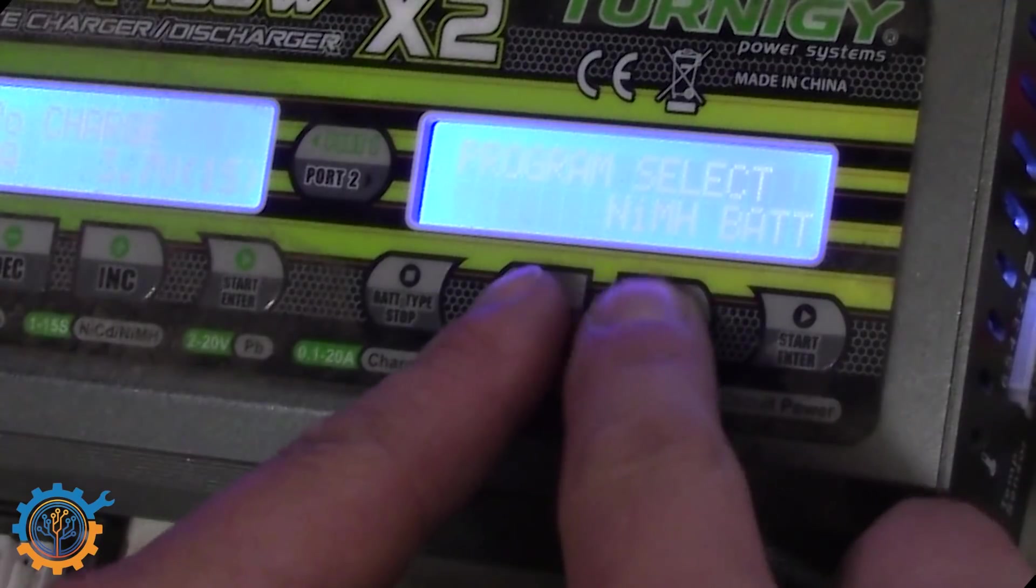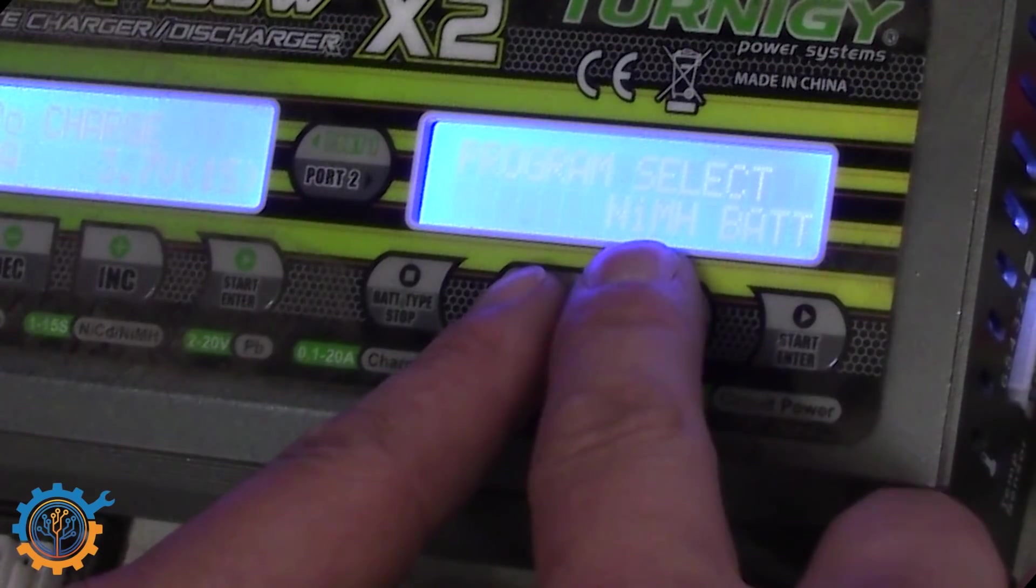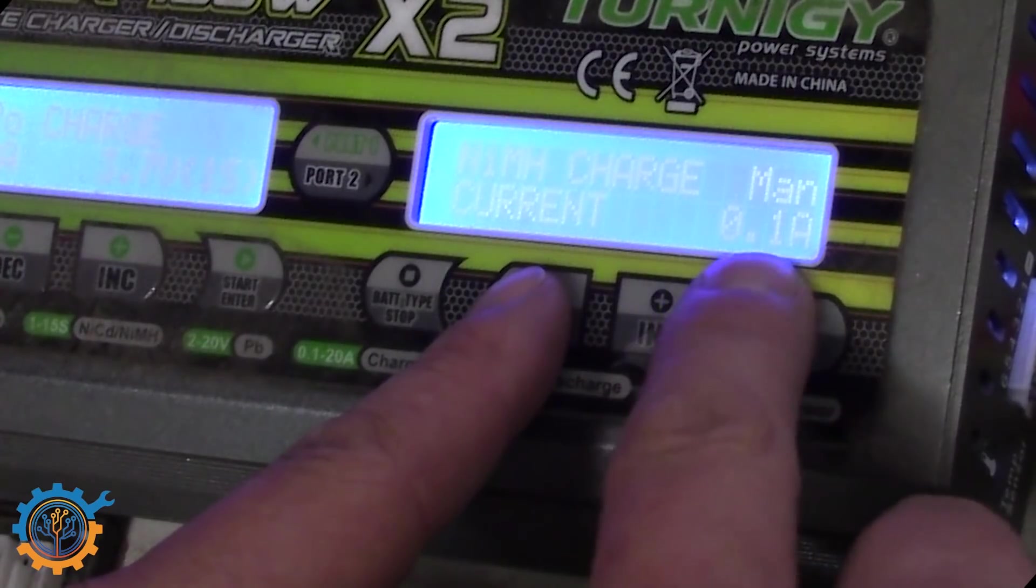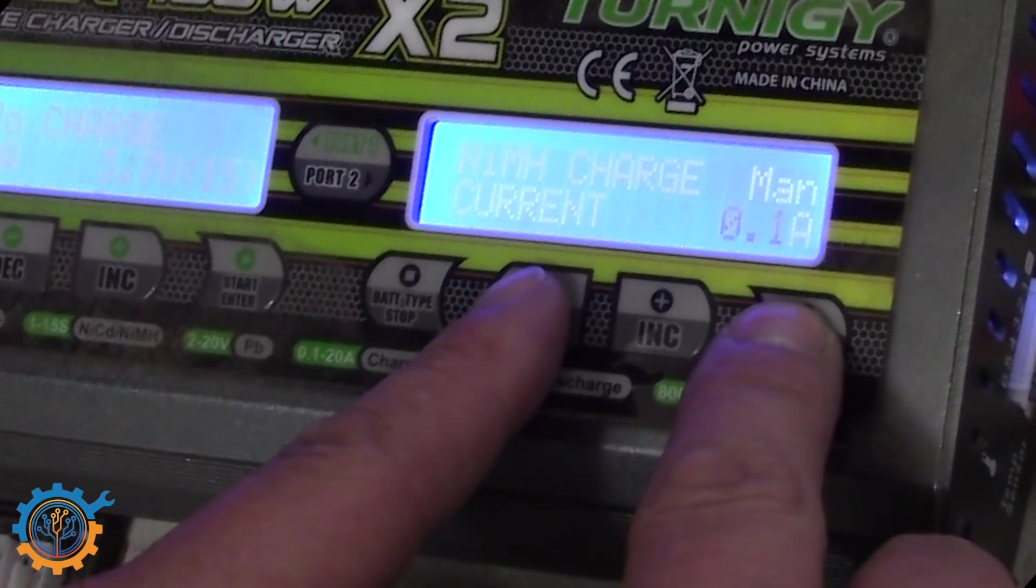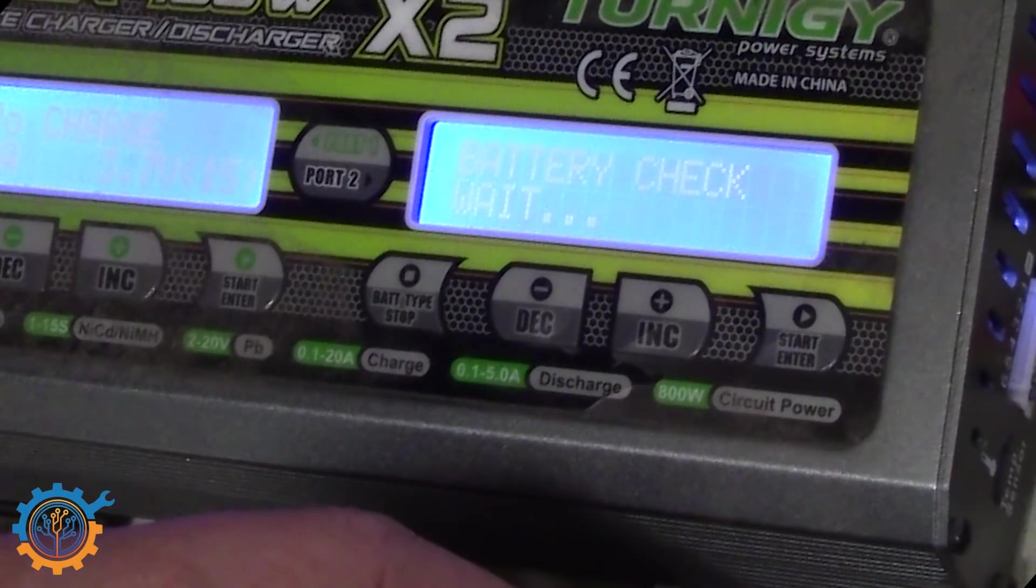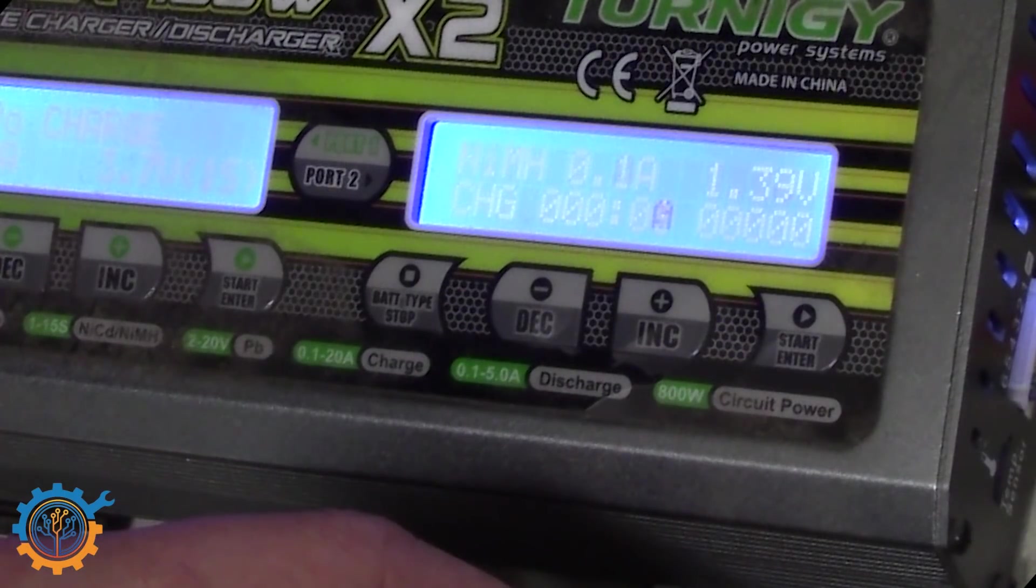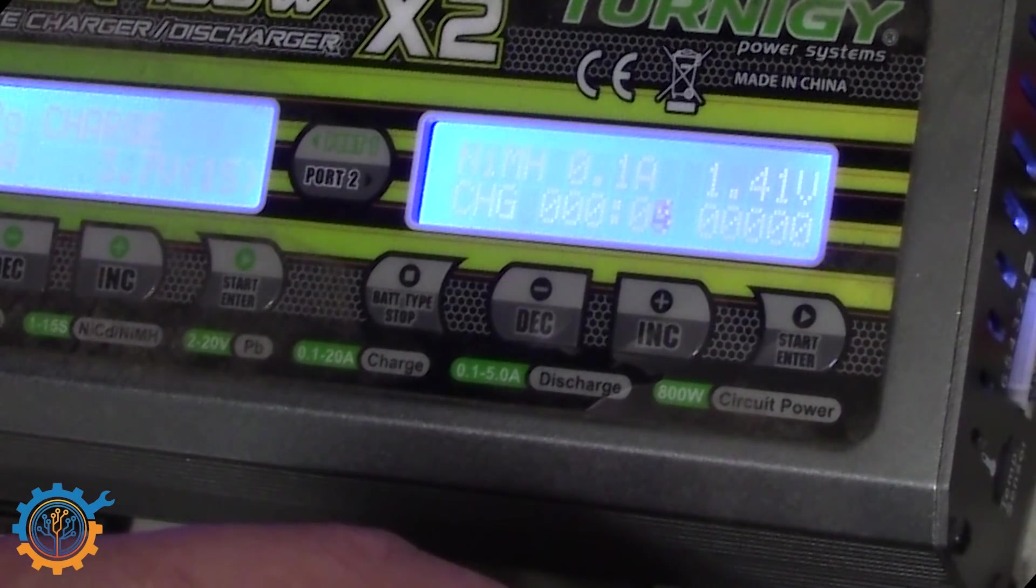So what you instead need to do is that you either go into Nickel-Cadmium mode or Nickel-Metal Hydride mode. And we set the current to 100mA. And you run it. This will trickle this battery up a little bit at least. And in most cases that is enough.